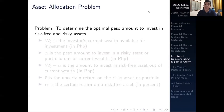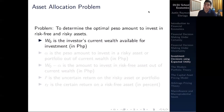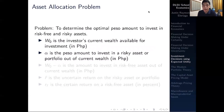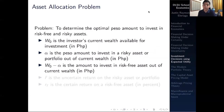The asset allocation problem is to determine the optimal amount to invest in risk-free and risky assets. We let W0 be the investor's current wealth available for investment. Alpha is the amount invested in the risky asset or portfolio out of current wealth. Then W0 minus alpha is the amount invested in the risk-free asset. So W0 is split: alpha goes into the risky asset and the remainder into the risk-free asset.